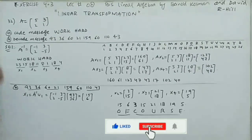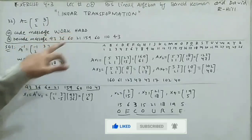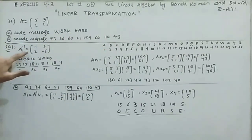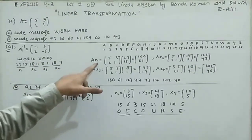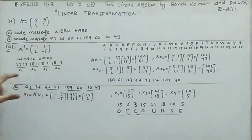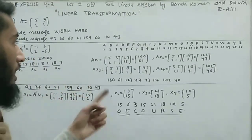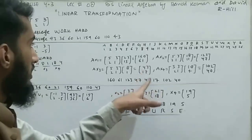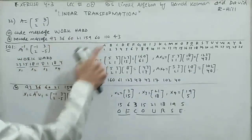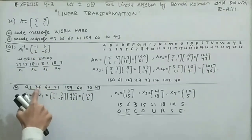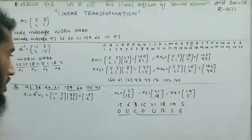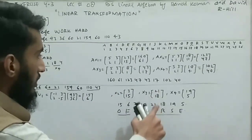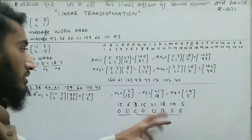Question 32, the last question of Exercise 4.3: matrix A = [5,3; 2,1] is given. Part (a): encode 'WORK HARD'. Converting: W=23, O=15, R=18, K=11, H=8, A=1, R=18, D=4. Multiplying A by vectors x₁, x₂, x₃, x₄ gives encoded output: 160,61 | 123,47 | 43,17 | 102,40. Part (b): decode the given sequence using A⁻¹ = [-1,3; 2,-5], which yields the decoded message 'OF COURSE'.